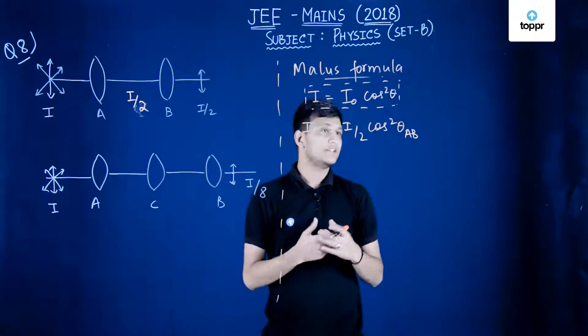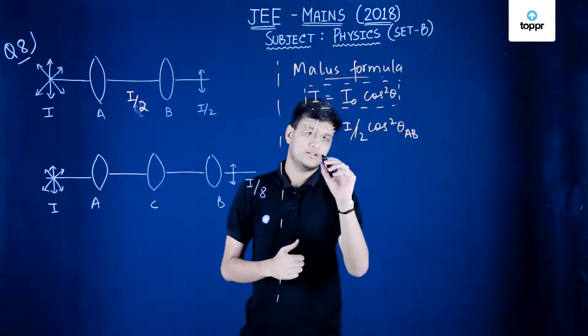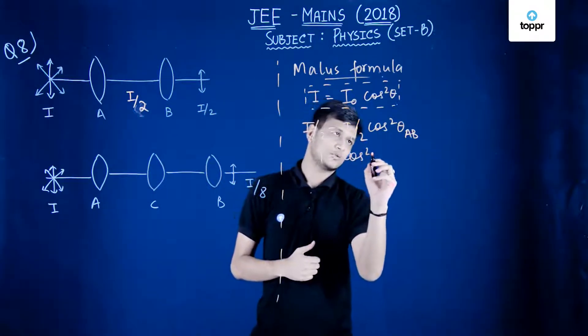The angle between A and B is theta AB. From here we can get 1 equals cos square theta AB.